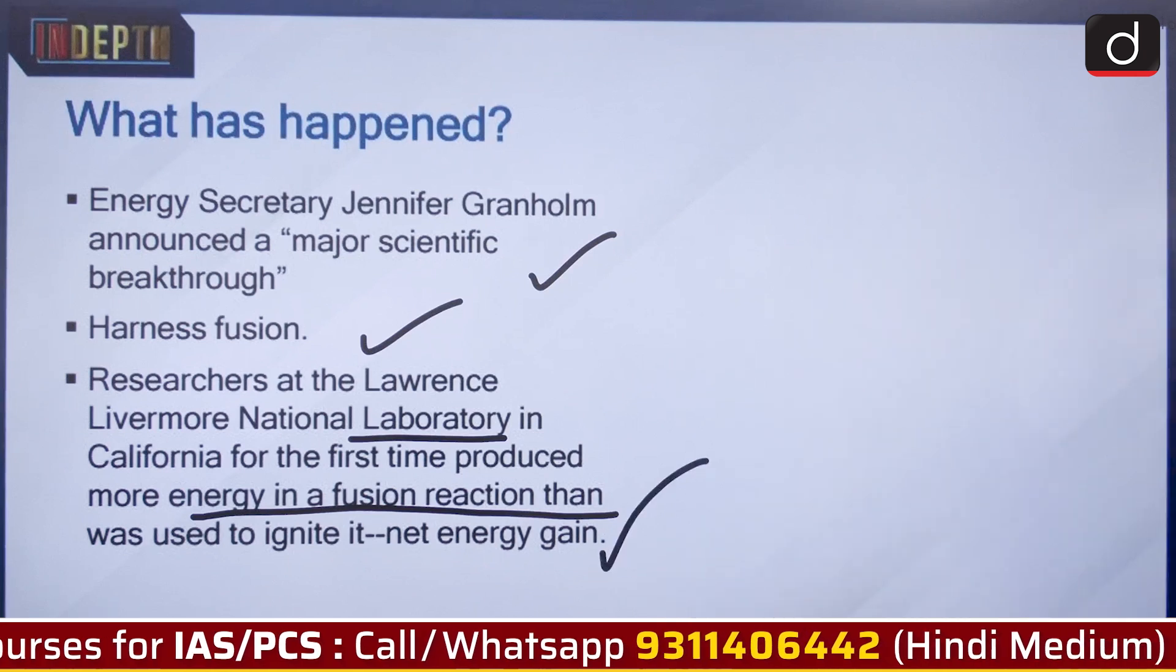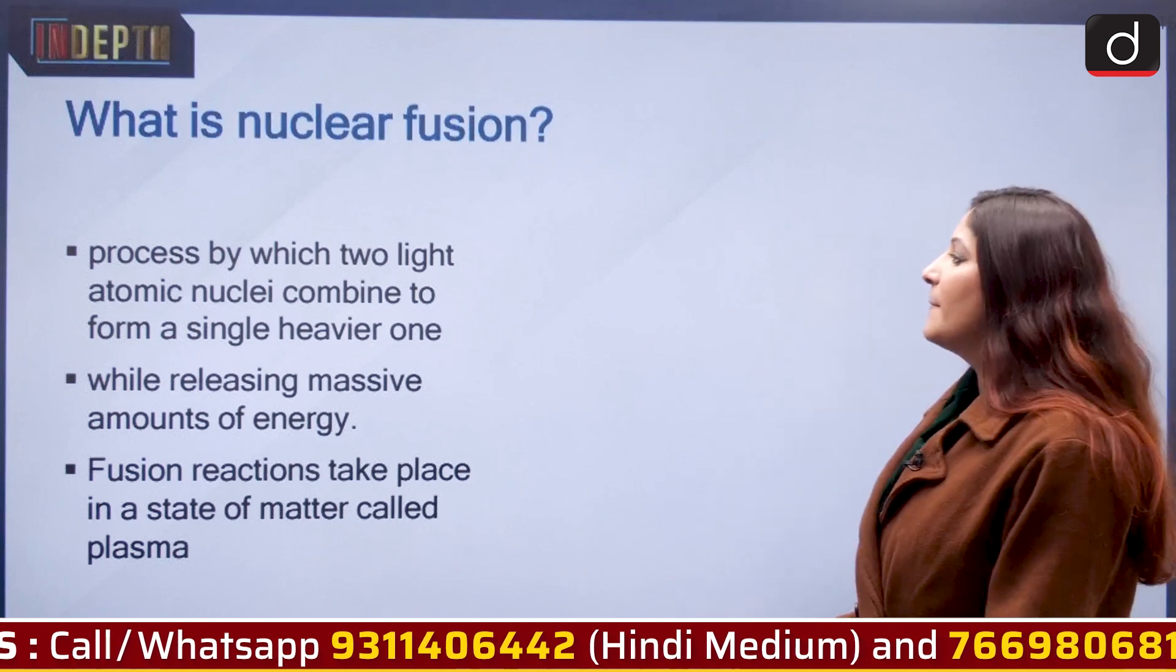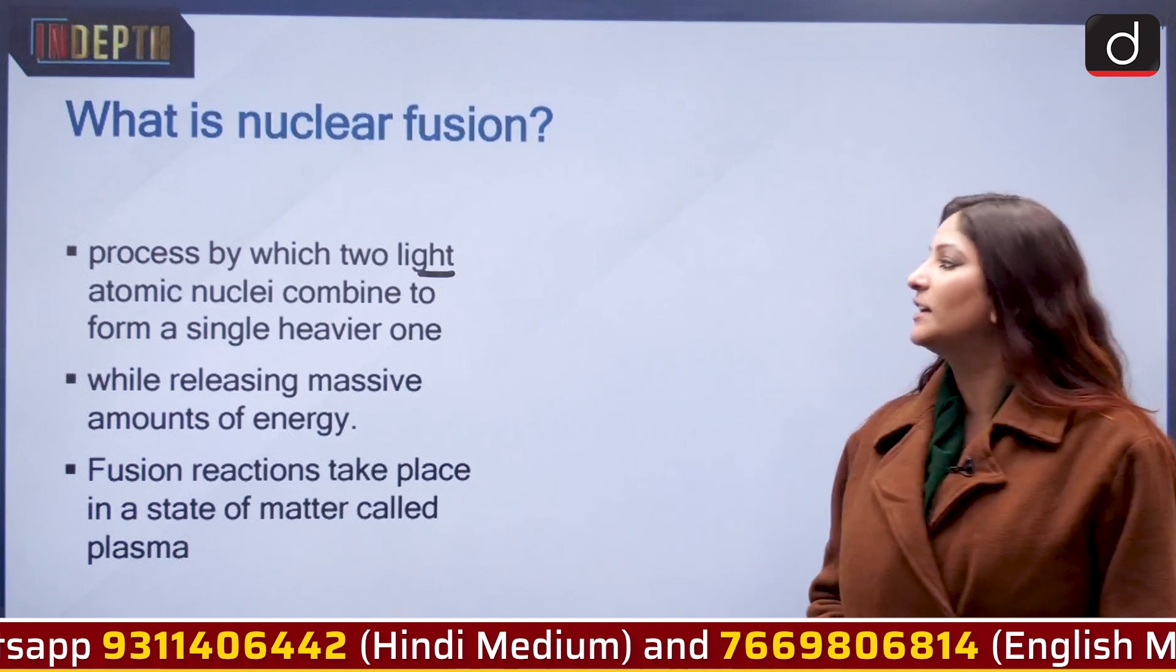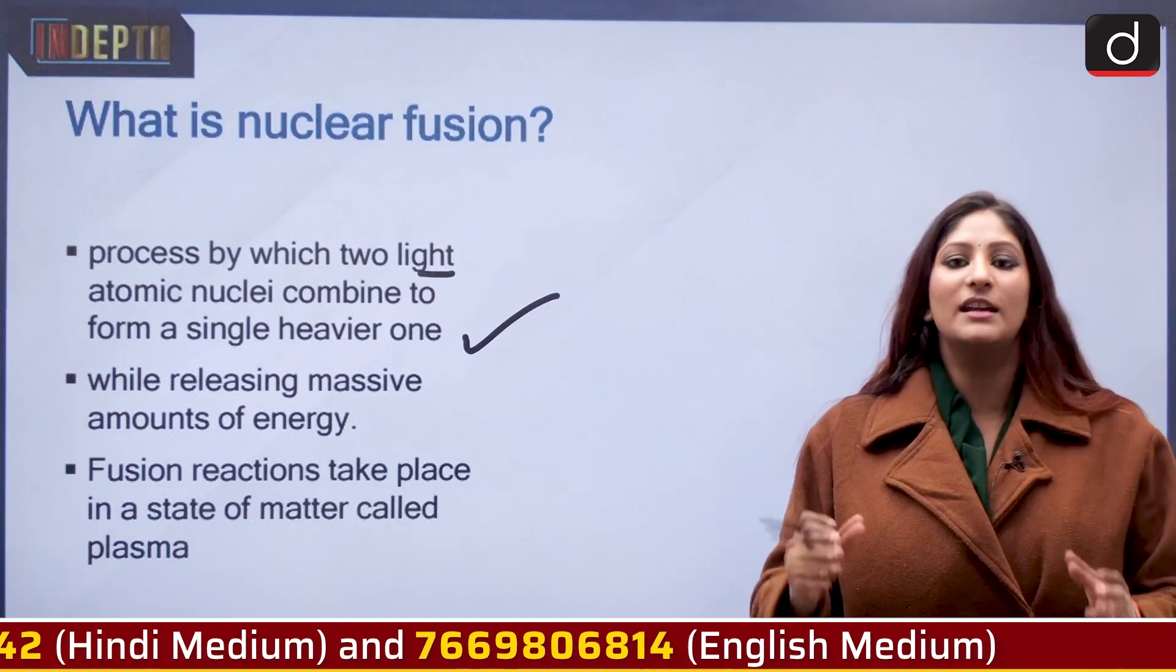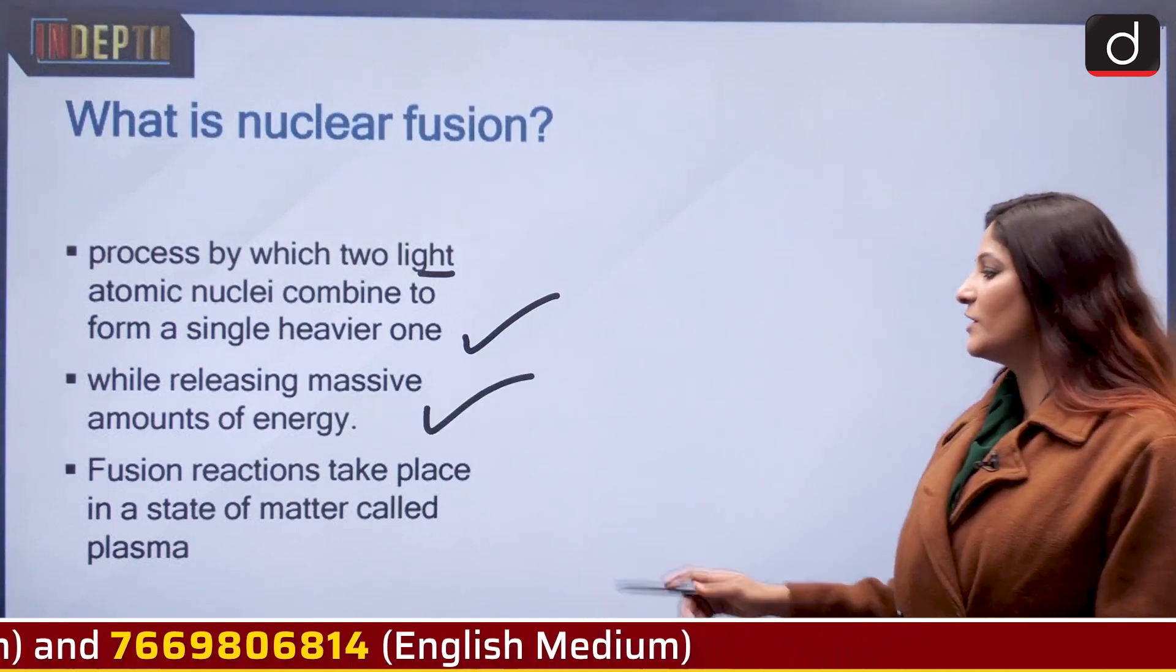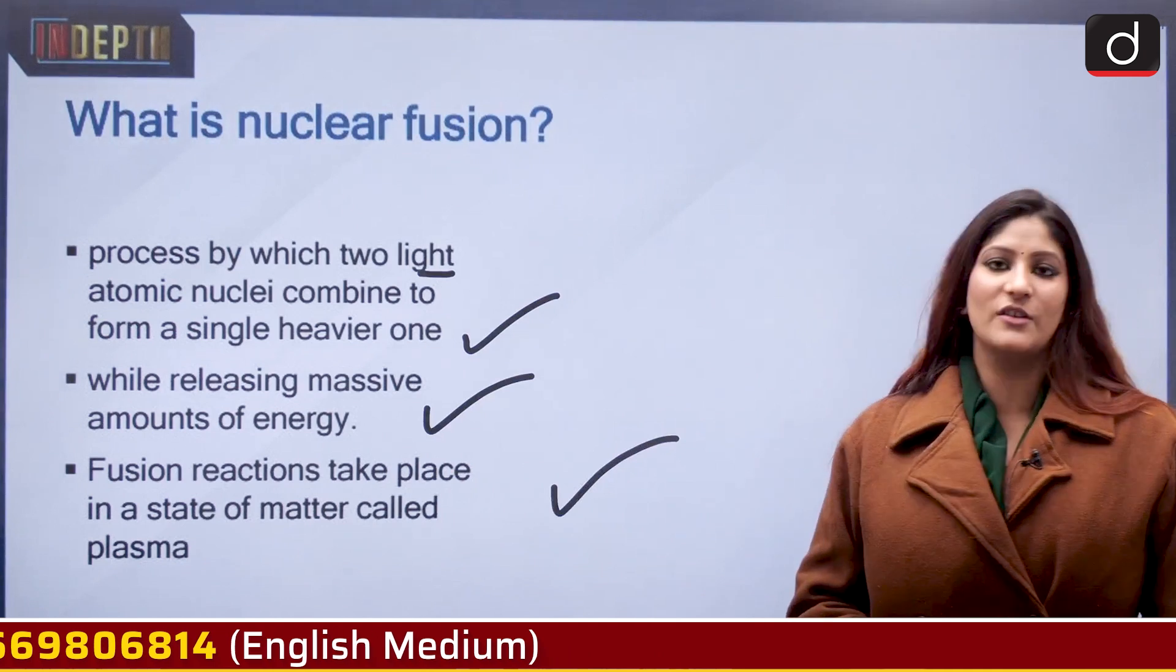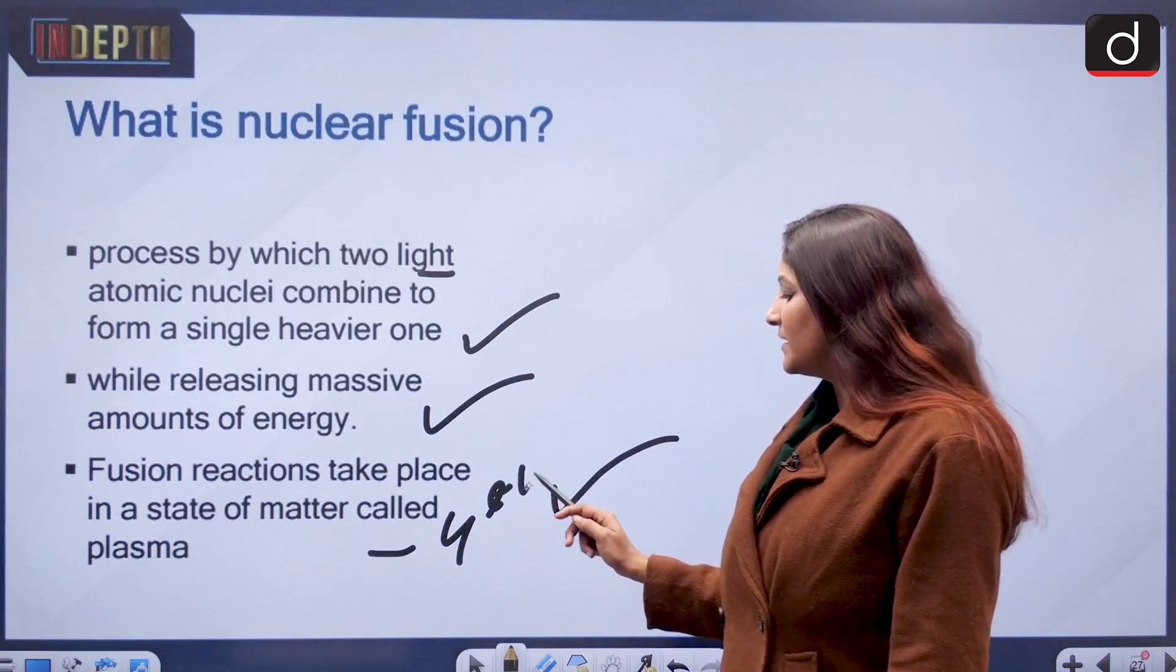What is nuclear fusion? Nuclear fusion is a process by which two light atomic nuclei combine to form a single heavier one. When they combine, they release massive amounts of energy. Fusion reactions take place in a state of matter called plasma.